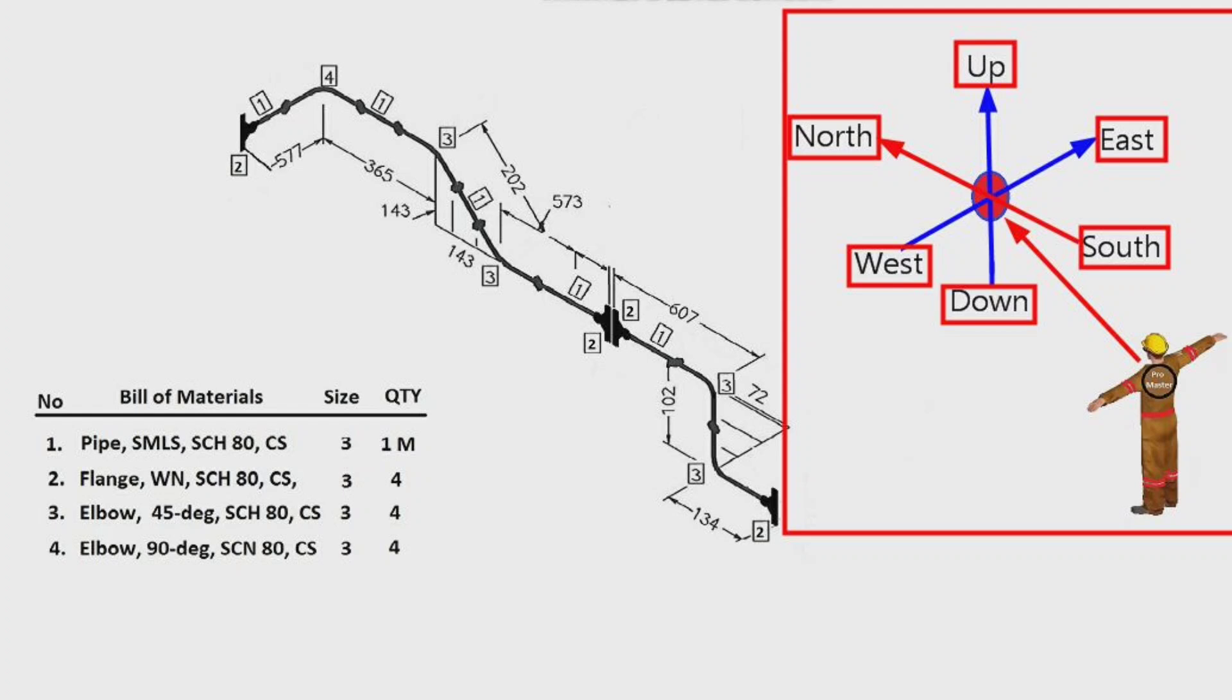Now that we know the names of the directions, we can read this drawing. Let's start reading the drawing from this starting point. The pipeline starts moving in the north direction at this starting point. The pipeline continues its movement first to the east and then to the north horizontally at an angle of 45 degrees along the dashed lines here.